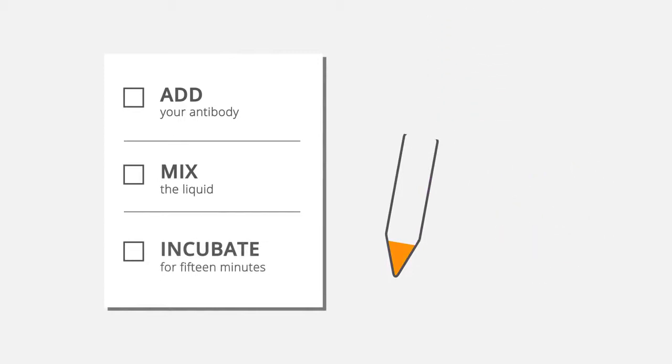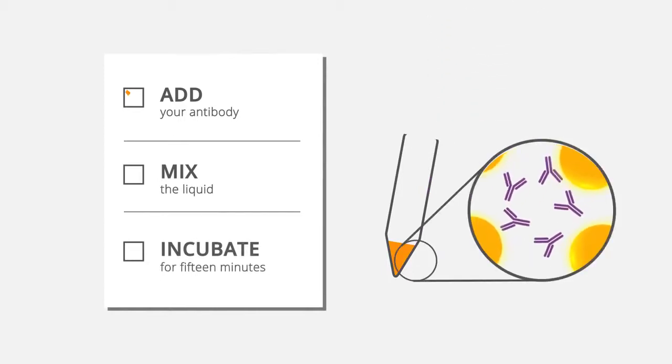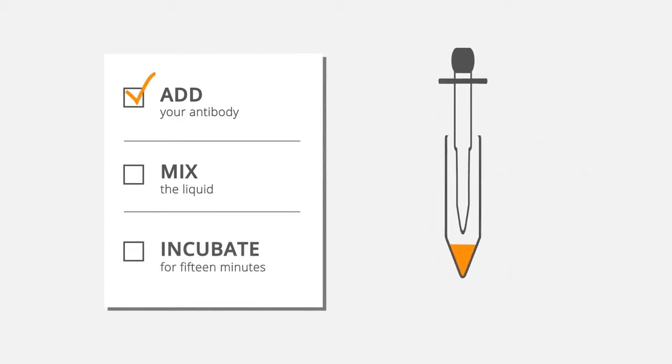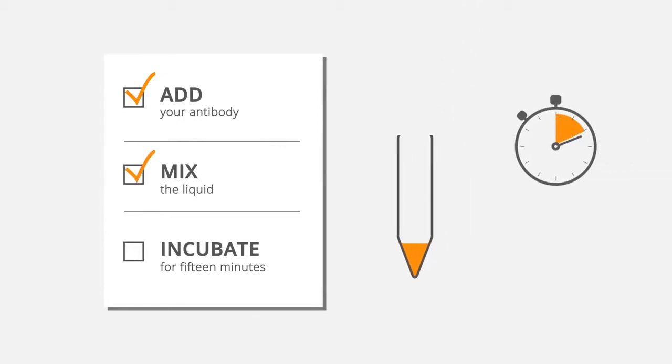First, simply add your antibody to the freeze dried material containing the InnovaCoat Gold nanoparticles. Next, mix the liquid using a pipette. Finally, incubate for 15 minutes.